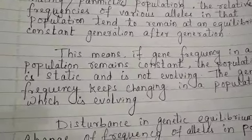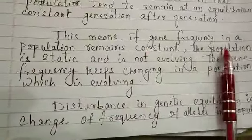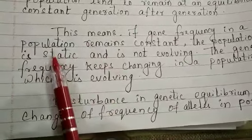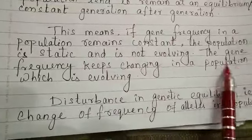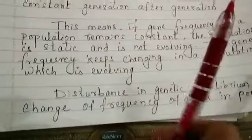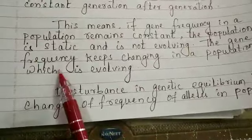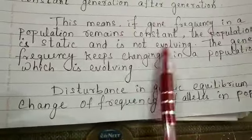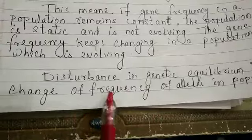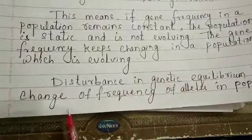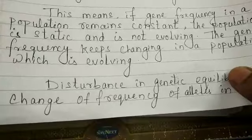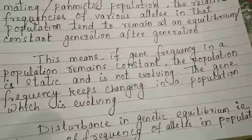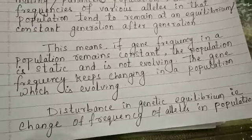If the equilibrium is found, we find no evolution is occurring. If gene frequency in a population remains constant, the population is static — it is not undergoing any evolution. The gene frequency keeps changing in a population which is evolving. Any disturbance in the genetic equilibrium, that is, change in the frequency of alleles, especially in a small population, is called genetic drift and it results in evolution.